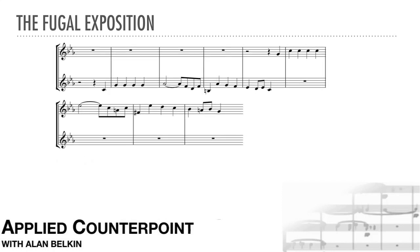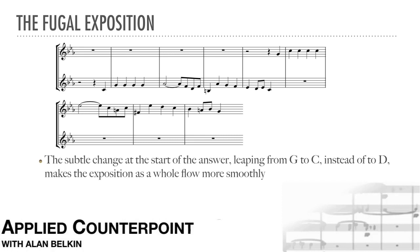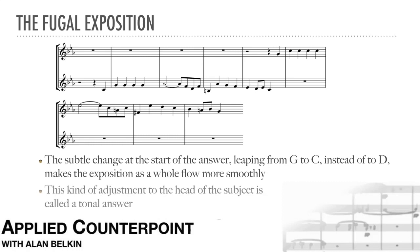What Bach actually does is this. The subtle change at the start of the answer, leaping from G to C instead of to D, makes the exposition as a whole flow more smoothly — it's tonally more coherent. Note that the rest of the answer is transposed literally to the dominant, as usual. This kind of adjustment to the head of the subject is called the tonal answer.